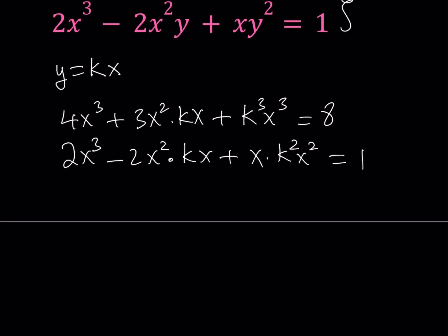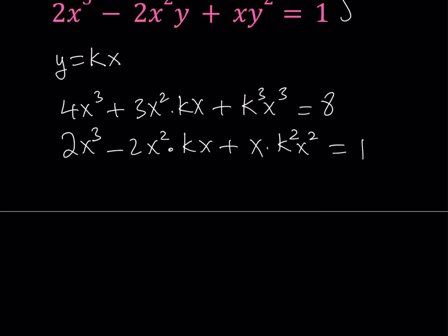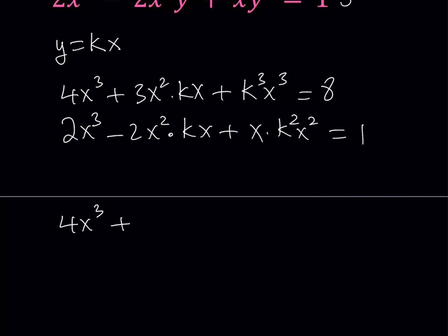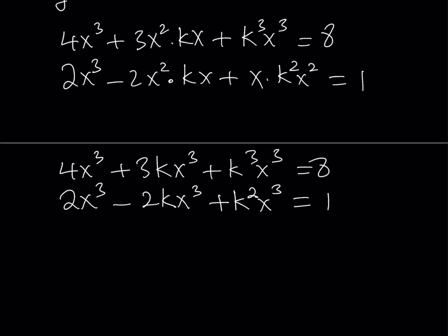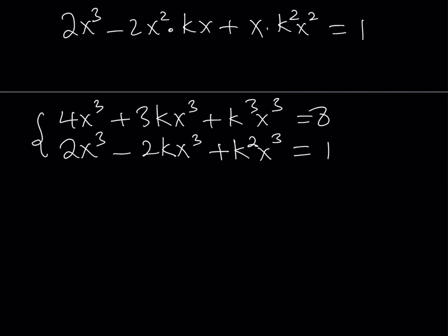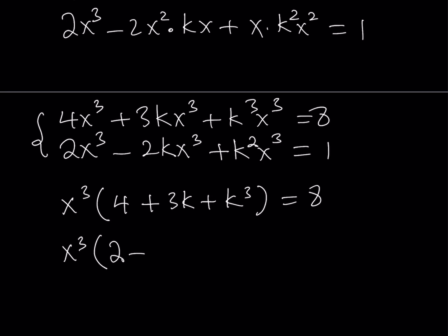Now let's simplify. Multiplying x² by x gives x³, so we get 3kx³. Simplifying both equations: the first becomes x³(4 + 3k + k³) = 8, and the second becomes x³(2 - 2k + k²) = 1.